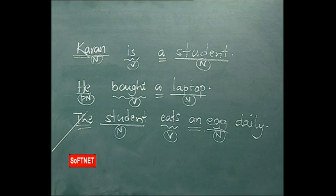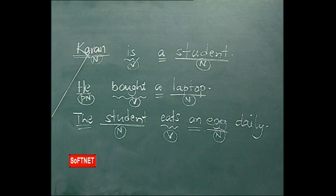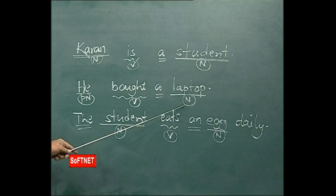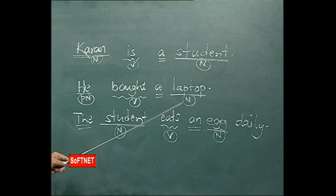Karan is a student. He bought a laptop. The student eats an egg daily. Generally, in a sentence we have three parts: subject, verb, and object. In the place of subject and object, we find nouns or pronouns. Karan is a proper noun, student is a common noun. In the second sentence, we have a pronoun in the subject place and a common noun in the object place.